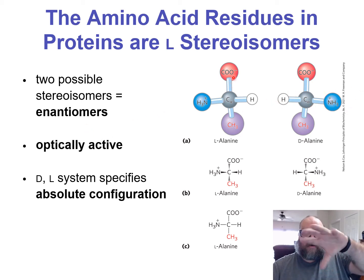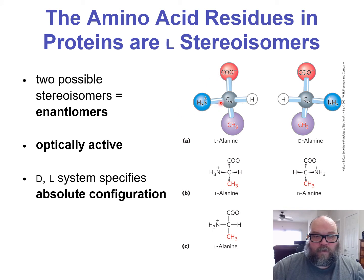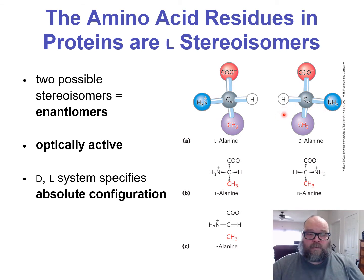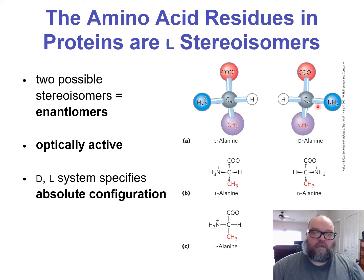Remember, the alpha carbon is a chiral center where things can spin around, but this isn't just spinning around. Because if the amino were here, for it to have spun around its chiral center, then right here should be the carboxyl. But since the carboxyl is still in line with the R group — a methyl group — the hydrogen and the amino have swapped places.